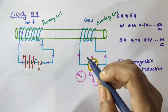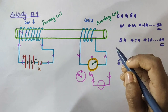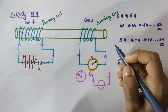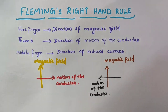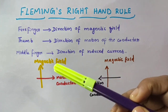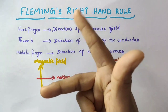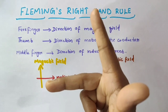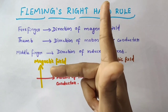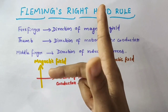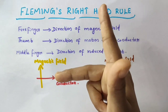The induced current is found to be highest when the direction of motion of the coil is at right angles to the magnetic field. To know the direction of the induced current we can make use of a simple rule — Fleming's right hand rule. To use Fleming's right hand rule, you take your right hand and stretch your thumb, forefinger, and middle finger so that they are mutually perpendicular to each other. The forefinger indicates the direction of the magnetic field, the thumb shows the direction of motion of the conductor, and the middle finger gives us the direction of induced current.